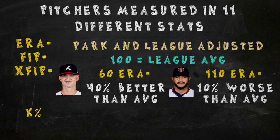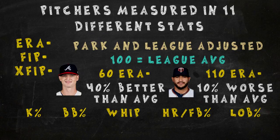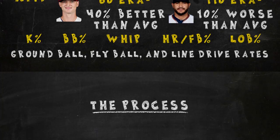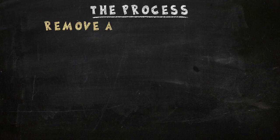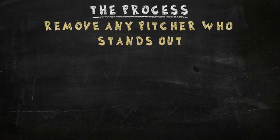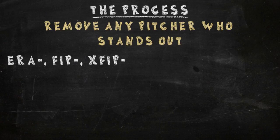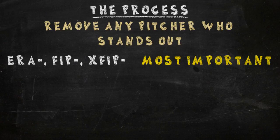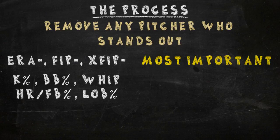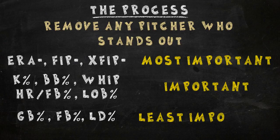We'll also be looking at strikeout percentage, walk percentage, WHIP (walks plus hits per innings pitched), home run per fly ball rate, and left on base percentage, which is just the percentage of base runners a pitcher strands on base. I also looked at ground ball, fly ball, and line drive percentages. As far as my process goes, I removed anyone who stood out in a particular stat until I had a short list of 3-5 players. The run prevention metrics had the least amount of leeway, our remaining pitching stats had a bit more room for deviation, and for the batted ball rates I allowed for the most deviation.